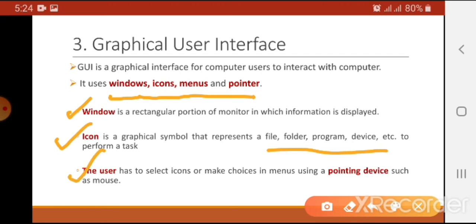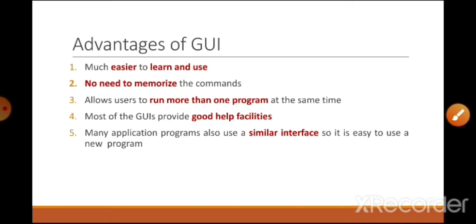The user makes choices by using a pointing device such as a mouse. Whenever we use a computer we use a pointing device — either a mouse, a joystick, or a touchpad on a laptop. With the help of those pointing devices a cursor appears on screen in an arrowhead shape, which is known as the pointer. With the pointer we can click and point to different objects on screen.